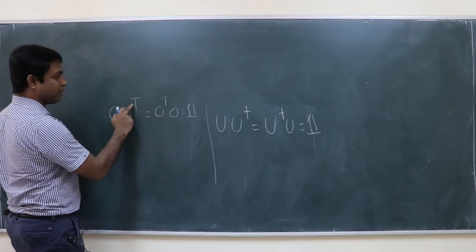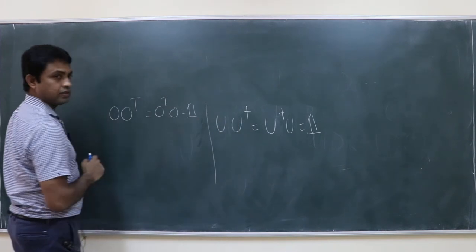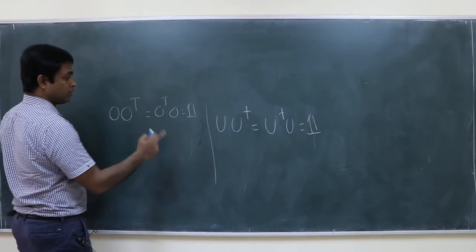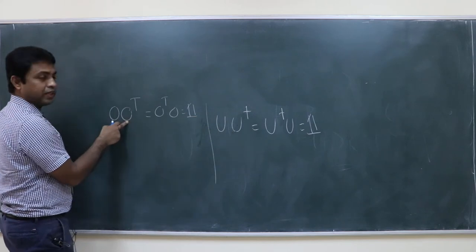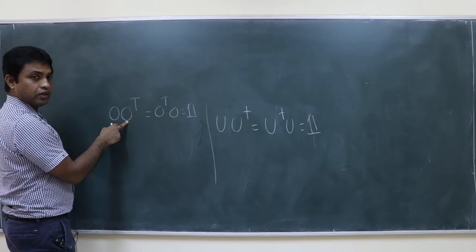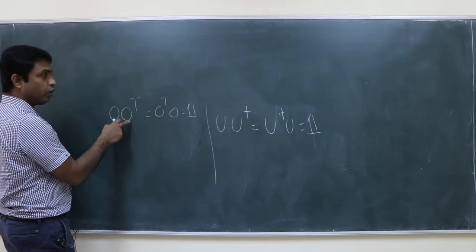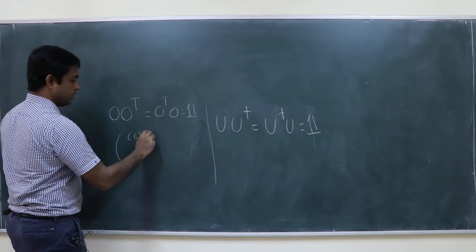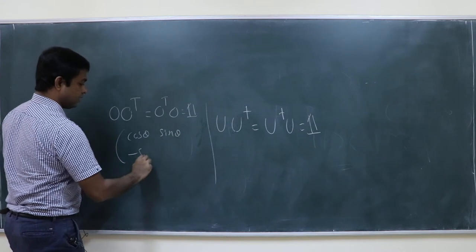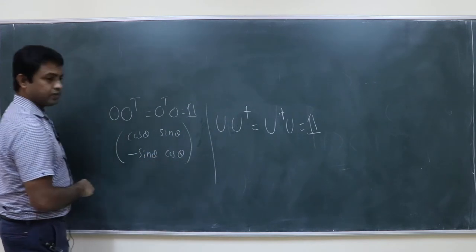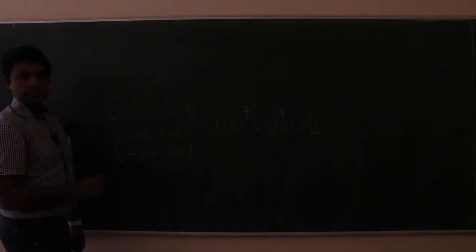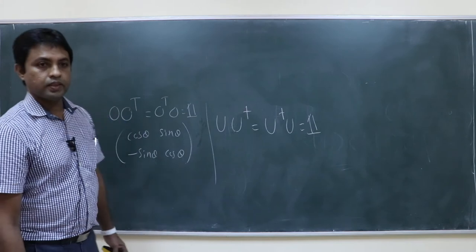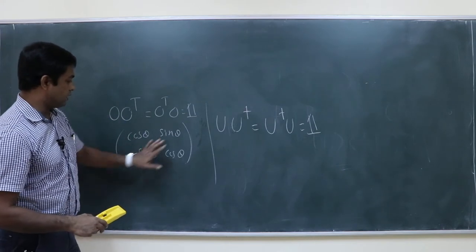What is the difference between transpose and dagger? For dagger, you also take the complex conjugate. So the unitary condition is a more general case; orthogonal matrices are a special case when the matrix entries are real numbers with no complex components.